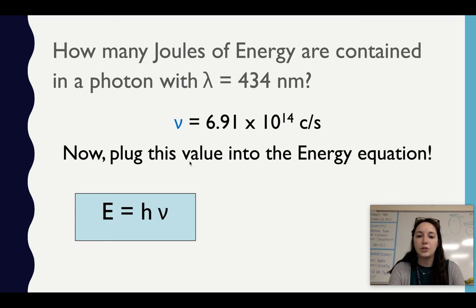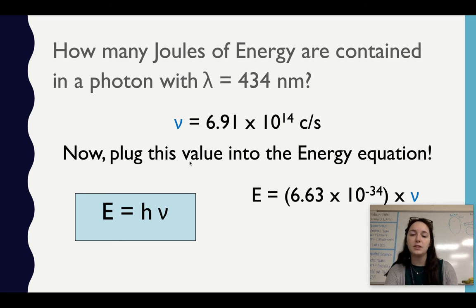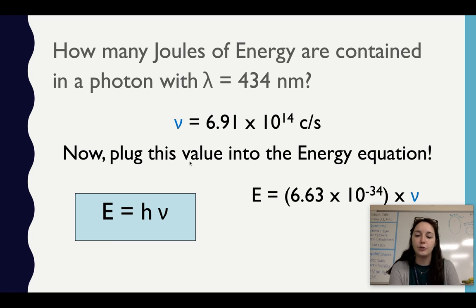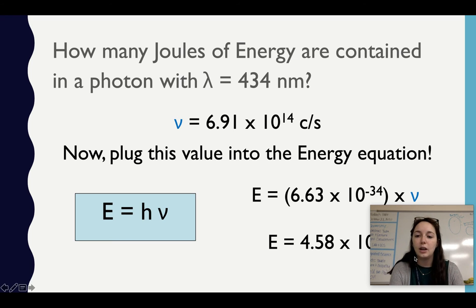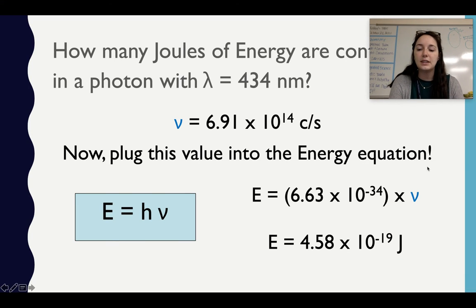Now plug this frequency value into the energy equation: E = hν. Take E = 6.63×10⁻³⁴ times 6.91×10¹⁴ cycles per second, and you should end up with an answer of 4.58×10⁻¹⁹ joules. That's all — not too bad.